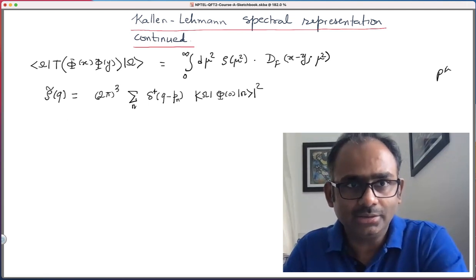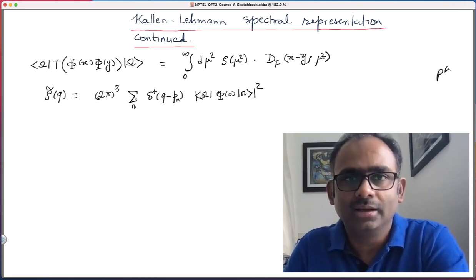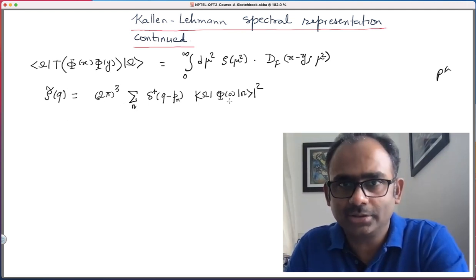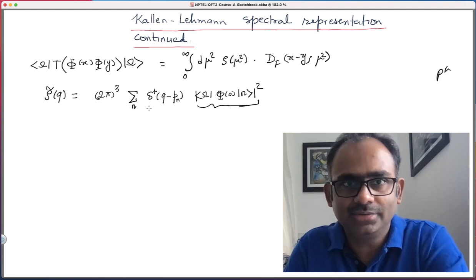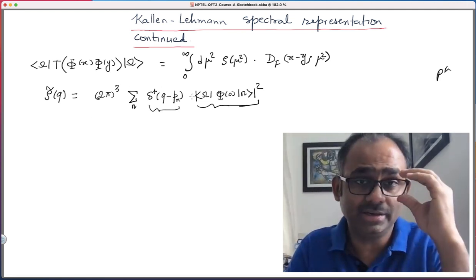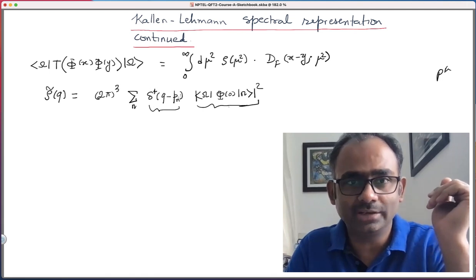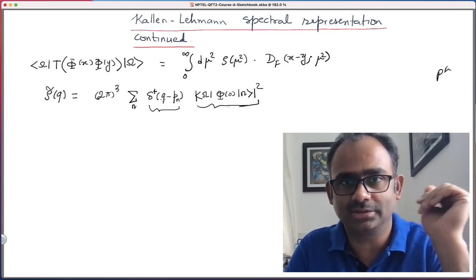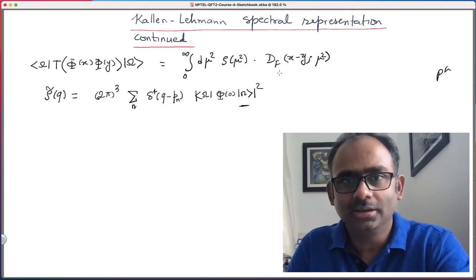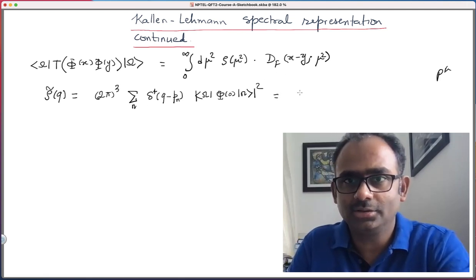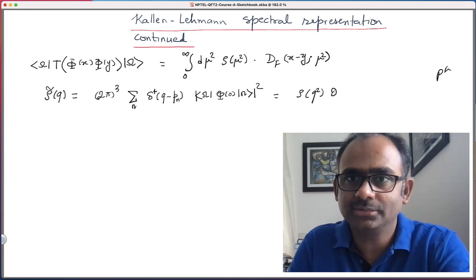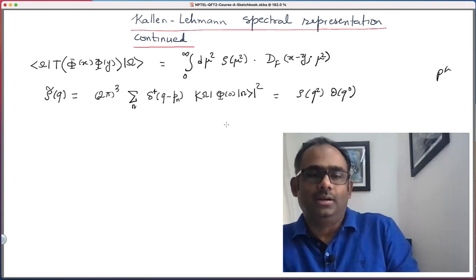And we had argued that rho tilde of q is a Lorentz invariant object because this factor here, this is Lorentz invariant, and this factor is Lorentz invariant, so this entire thing is Lorentz invariant. Also it is non-vanishing only if q naught is positive, and that is why we also wrote it as rho of q square times theta of q 0.